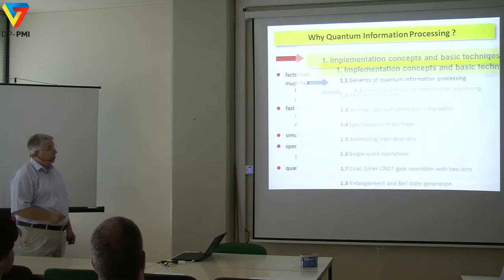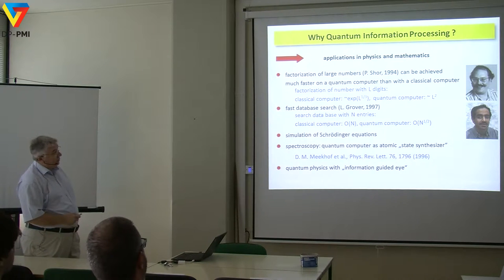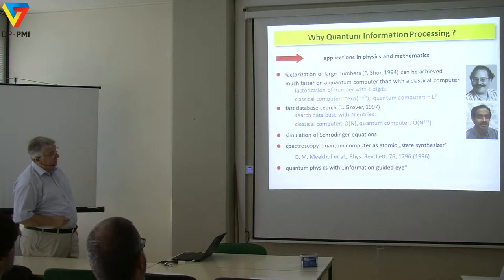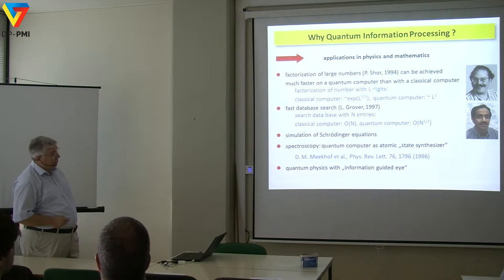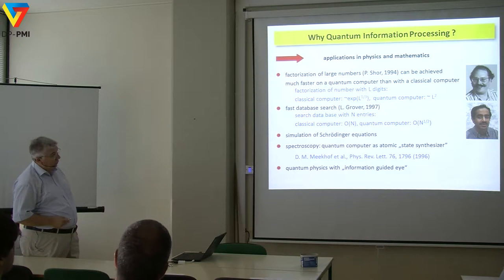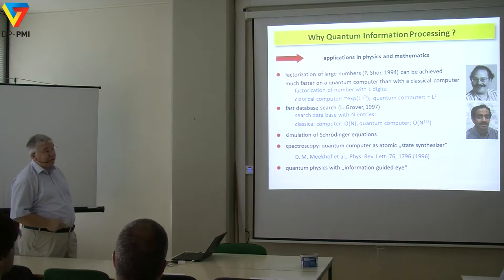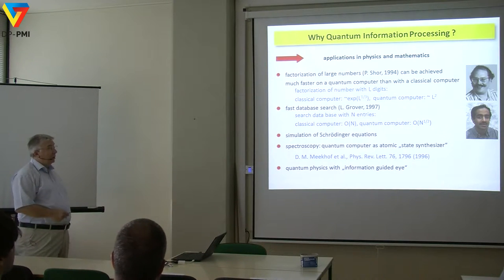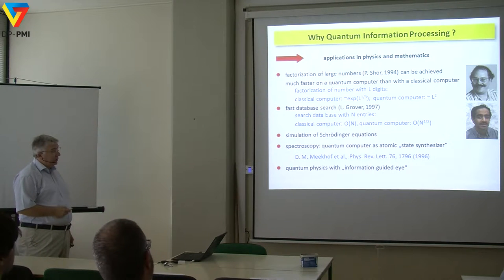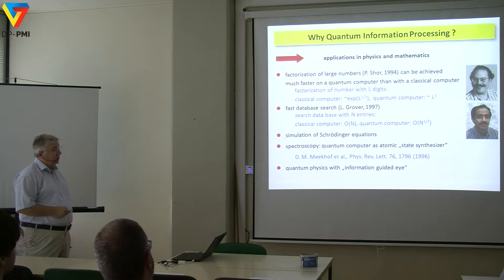This is again the same transparency you have seen in the colloquium. Why do we do quantum information processing? This whole thing started essentially with Peter Shor's invention of the Shor algorithm, in which he showed that with a quantum computer you can factor a number of L digits much faster than on a classical computer. It scales exponentially with the length of the digits on a classical computer, whereas it scales only polynomially on a quantum computer. That is the big advantage, which started the hype.